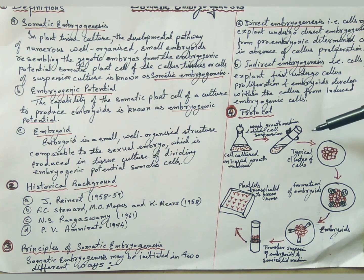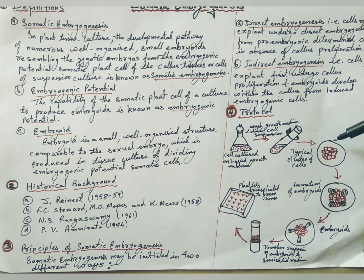Flasks are placed on a horizontal rotary shaker with 125 to 160 rpm at 25 degrees centigrade. Cell suspensions are subcultured every four weeks by transferring 5 ml to 65 ml of fresh liquid medium.